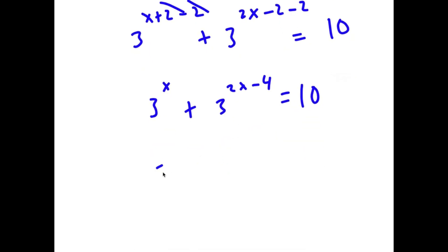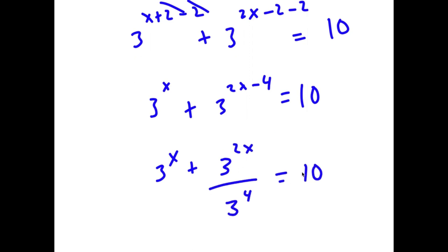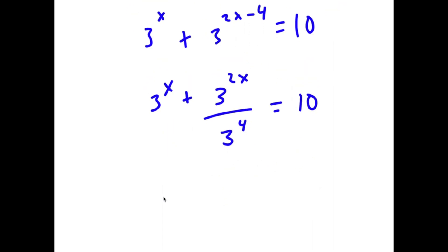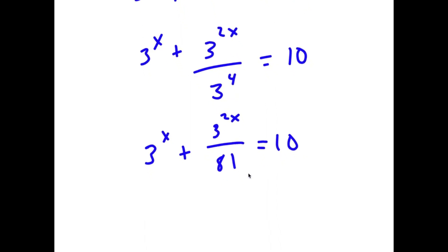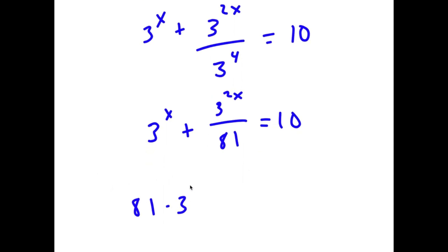Now 3 to the power of 2x minus 4 is the same thing as 3 to the power of 2x over 3 to the power of 4. And 3 to the power of 4 is 81, so I have 3 to the power of x plus 3 to the power of 2x over 81 is equal to 10. I'm going to multiply both sides by 81, so now I have 81 times 3 to the power of x plus 3 to the power of 2x is equal to 810.